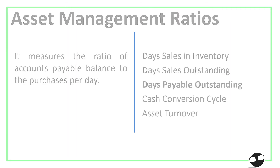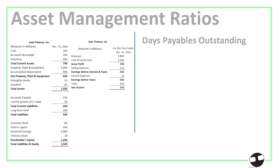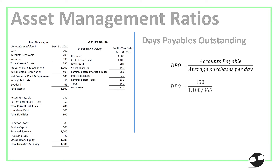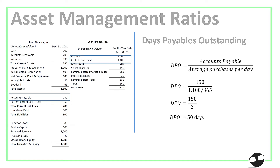Next, we have Days Payable Outstanding (DPO). It measures the ratio of accounts payable balance to purchases per day. The formula is accounts payable divided by average purchases per day, so that's 150 divided by 3, which gives us 50 days.